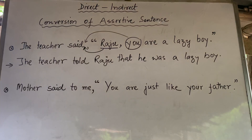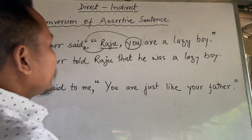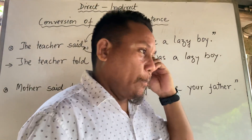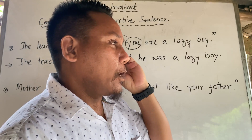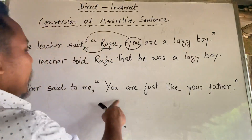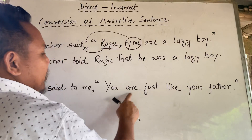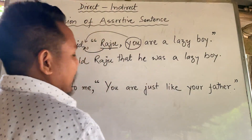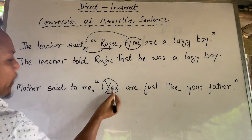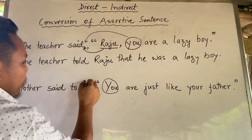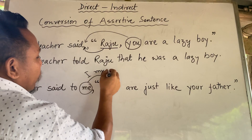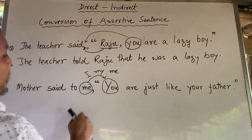Mother said to me, you are just like your father. This is the second person. The second person is the object change. Me is the object. I — possessive is my, objective is me.